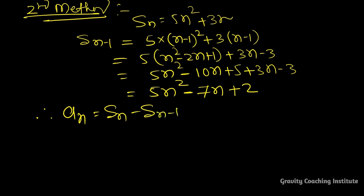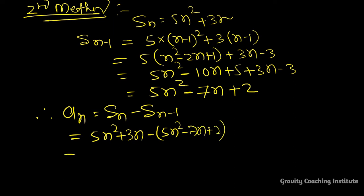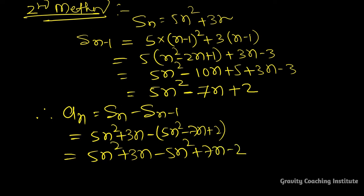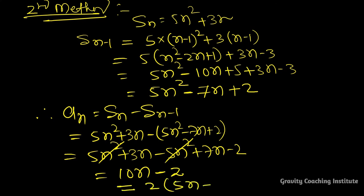Therefore, aₙ equals Sₙ minus Sₙ₋₁. That is (5n squared plus 3n) minus (5n squared minus 7n plus 2). Opening the bracket and changing signs, the 5n squared terms cancel, giving 10n minus 2. Taking 2 as common, aₙ equals 2(5n minus 1).